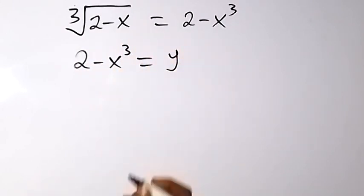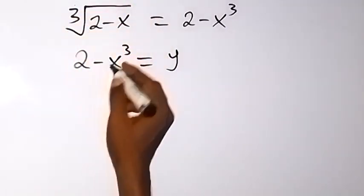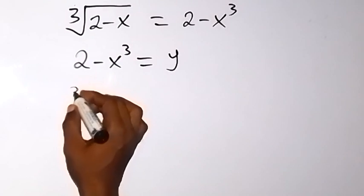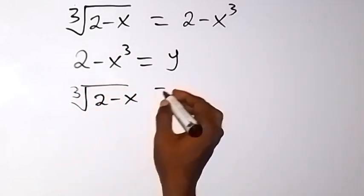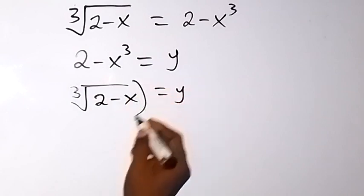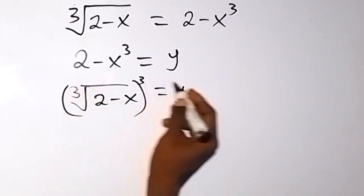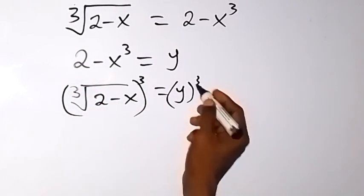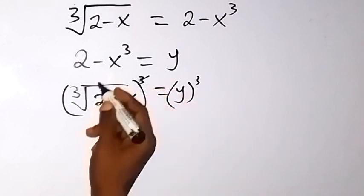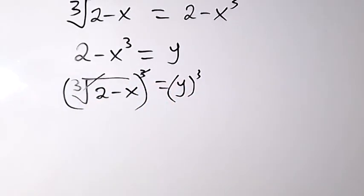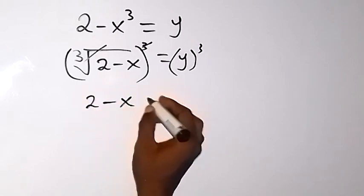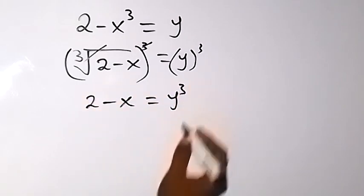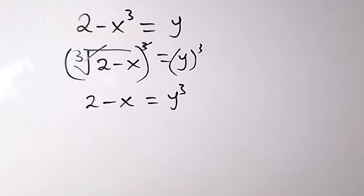Now it will be easier for us to take the cube root. We can rewrite this as: cube root of (2 minus x) equals y. When we take the cube root on both sides, the cube root cancels, so therefore 2 minus x equals y cubed.